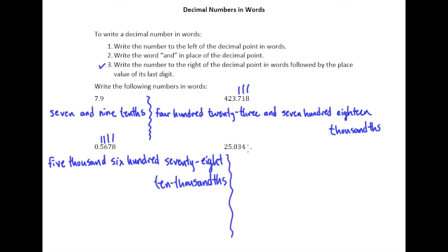Alright. So then finally we have this last one here. We have twenty-five. Oops. Helps if I spell twenty correctly. There's a w in there somewhere. Right? So we have twenty-five.